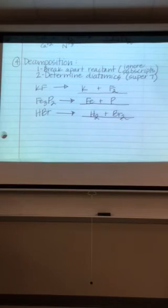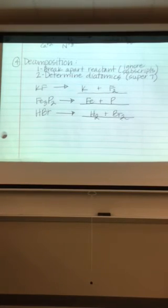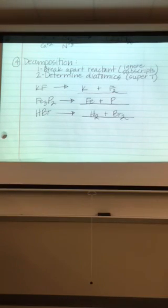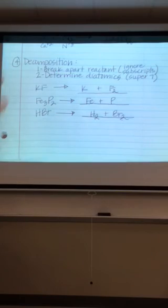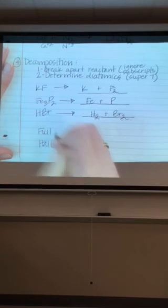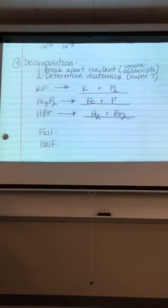What questions do you currently have? Why do Super 7 have a two on them? The Super 7 have a two on them because they're not stable by themselves. And so, in order to be happy, they bond with another atom of the same element that makes them happy. So, you guys are going to get two sheets today. You're going to get a full sheet. And then you're going to get a half sheet. And you are going to write on both of these sheets. Will you please hit the stop recording button?